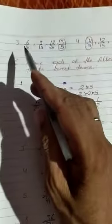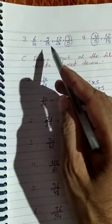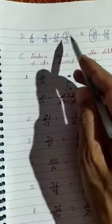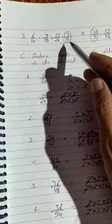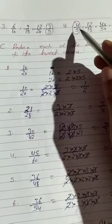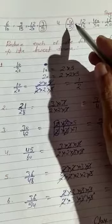Third question: 6 upon 10, 9 upon 15, 12 upon 20, and 3 upon 5. Here, 3 upon 5 is in lowest term, so we circle it. Question number 4: 4 upon 5 is in lowest term, so we circle it.